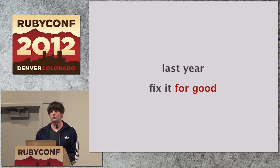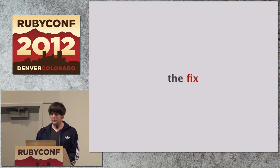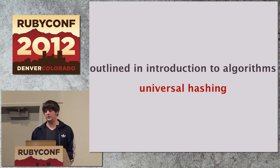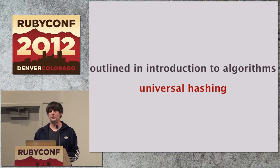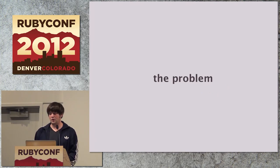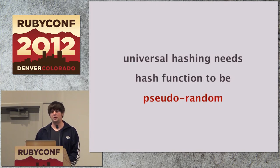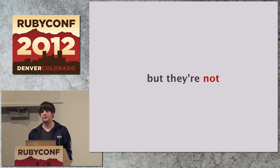But last year we decided to fix this for good in every other language too. The fix that was proposed was to randomize the hash function. This is something that was already outlined in the book Introduction to Algorithms — they call it universal hashing. Universal hashing means you just pick a random hash function from a family of hash functions, and this gives you an upper bound to the collision probability. But there's a problem with this thinking, because universal hashing explicitly assumes the hash function to act like a pseudo-random function — meaning the output is not distinguishable from a real random function. The problem is that basically every general purpose hash function is not pseudo-random, and just randomizing the seed as we did last year is not good enough.